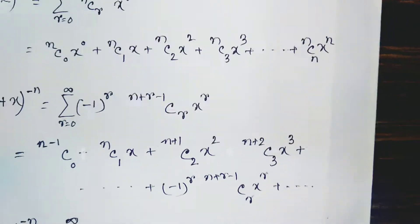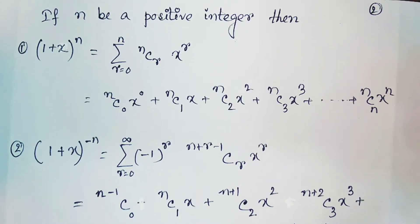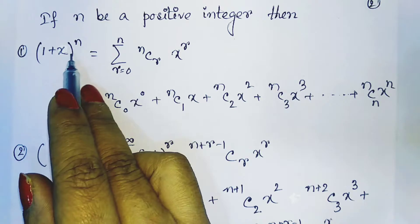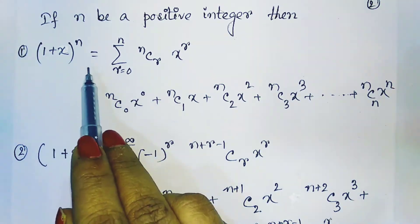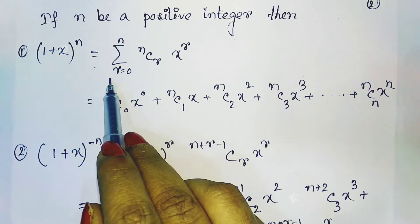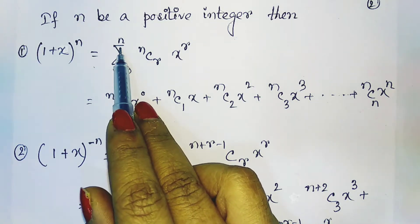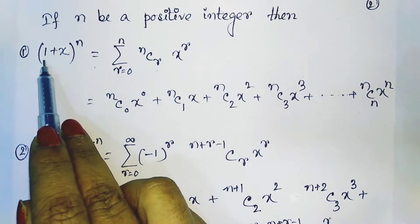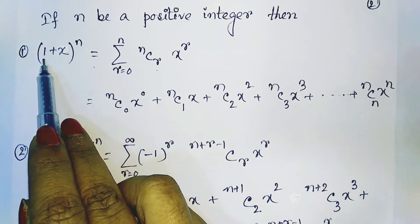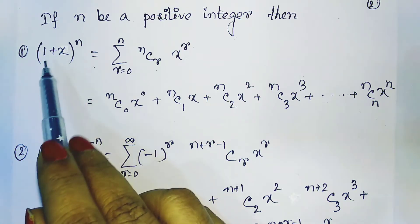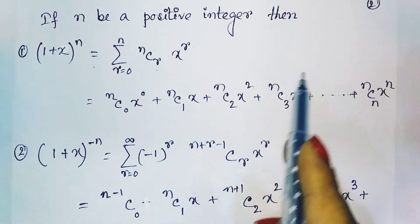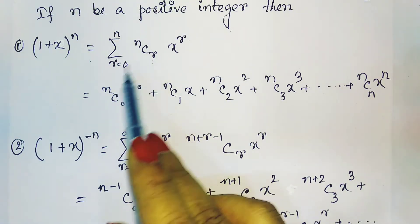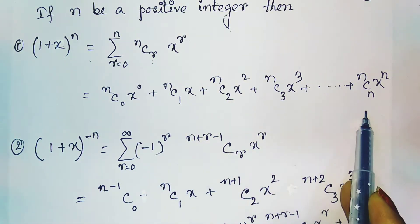Now, if n is a positive integer, then (1 + x)^n equals the summation of r = 0 to n of nCr · x^r. Here we consider y = 1, giving us 1 + x. If we expand, we substitute r = 0, 1, 2, 3 and we get this series.